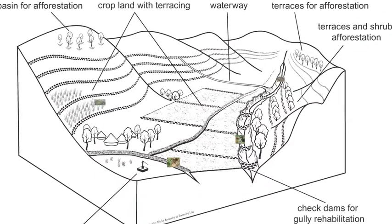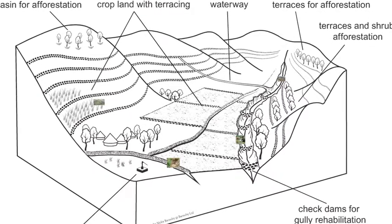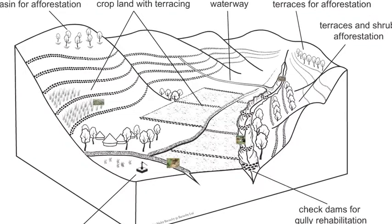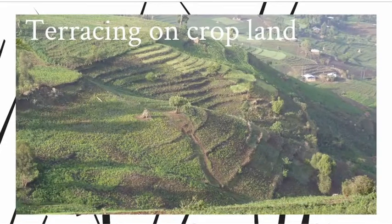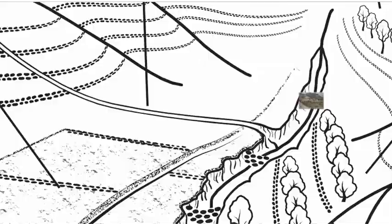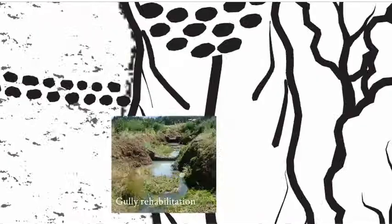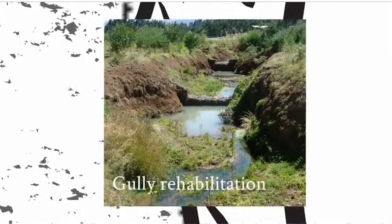A variety of approaches to rainwater management can help to prevent or reverse degradation by reducing erosion, maintaining soil fertility, and retaining water to support production and groundwater recharge. These include terraces on cropland, afforestation on slopes, gully rehabilitation, and more effective use of shallow groundwater for both productive and domestic purposes.